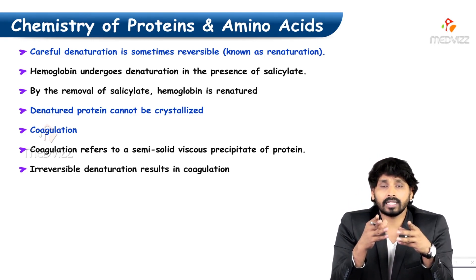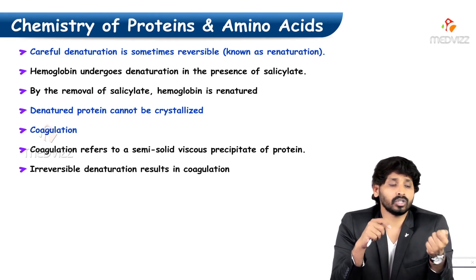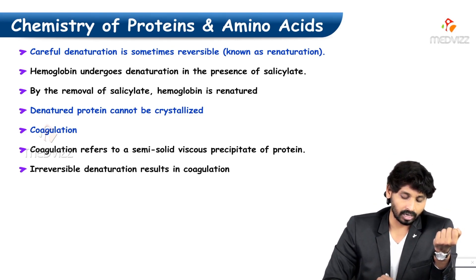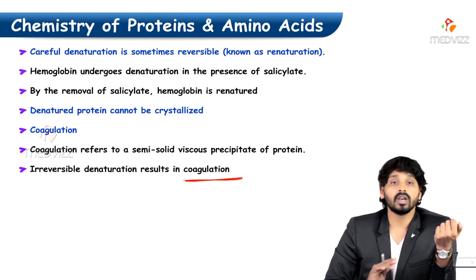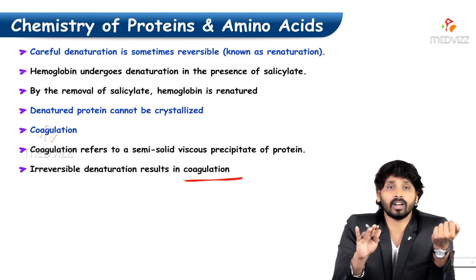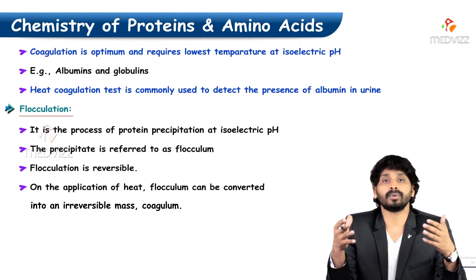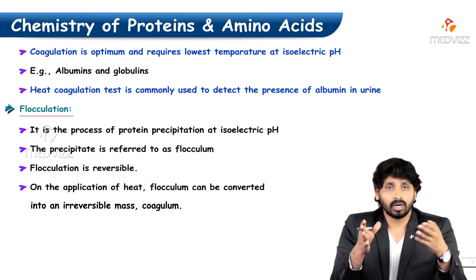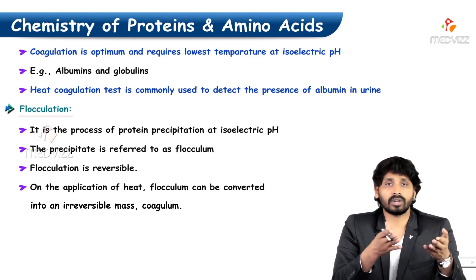Denatured protein cannot be crystallized but can be coagulated. Coagulation refers to the formation of a semi-solid viscous precipitate of protein when a protein solution is heated. Irreversible denaturation results in coagulation — once precipitated it cannot be renatured. Coagulation is optimum and requires the lowest temperature at the isoelectric pH. For example, albumins and globulins can be coagulated using temperature at the isoelectric pH.